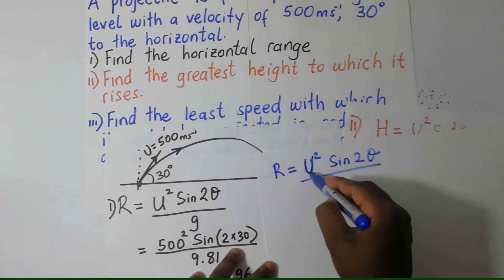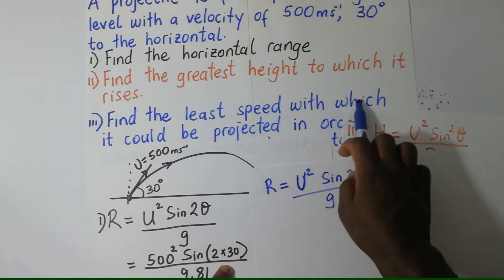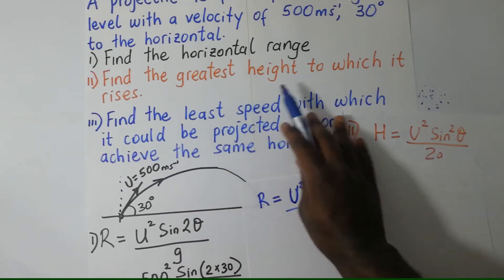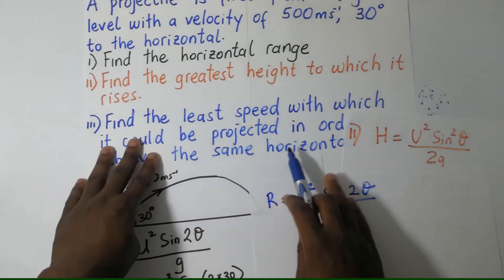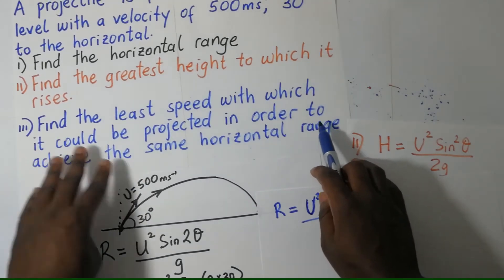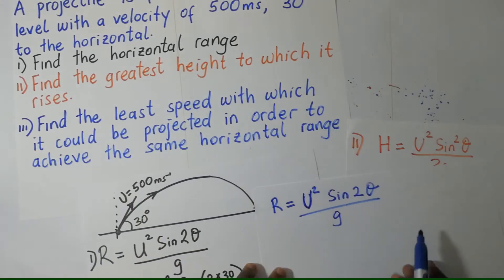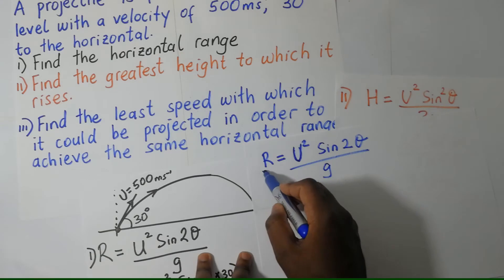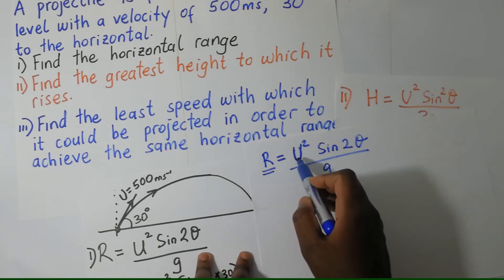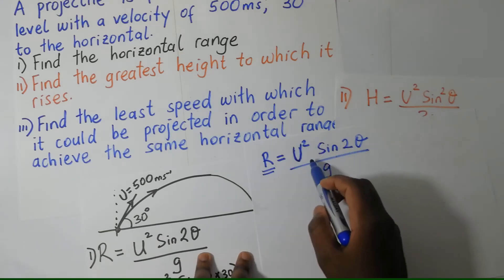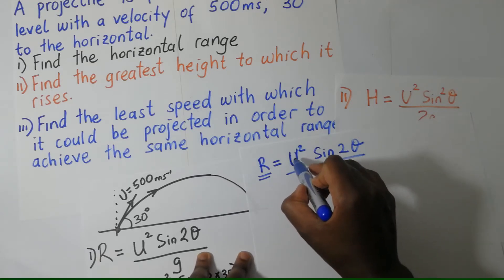The least speed. Find the least speed with which it could be projected in order to achieve the same horizontal range, the same value of R. Let's make U the subject of this formula because we want to find the least value of this.